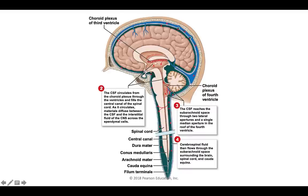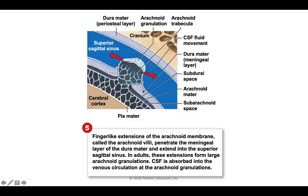Up near the dural folds, finger-like projections of the arachnoid extend into the superior sagittal sinus. This is where cerebrospinal fluid is absorbed back into the veins. The subarachnoid space contains the cerebrospinal fluid, which is reabsorbed into those superior sagittal sinuses.